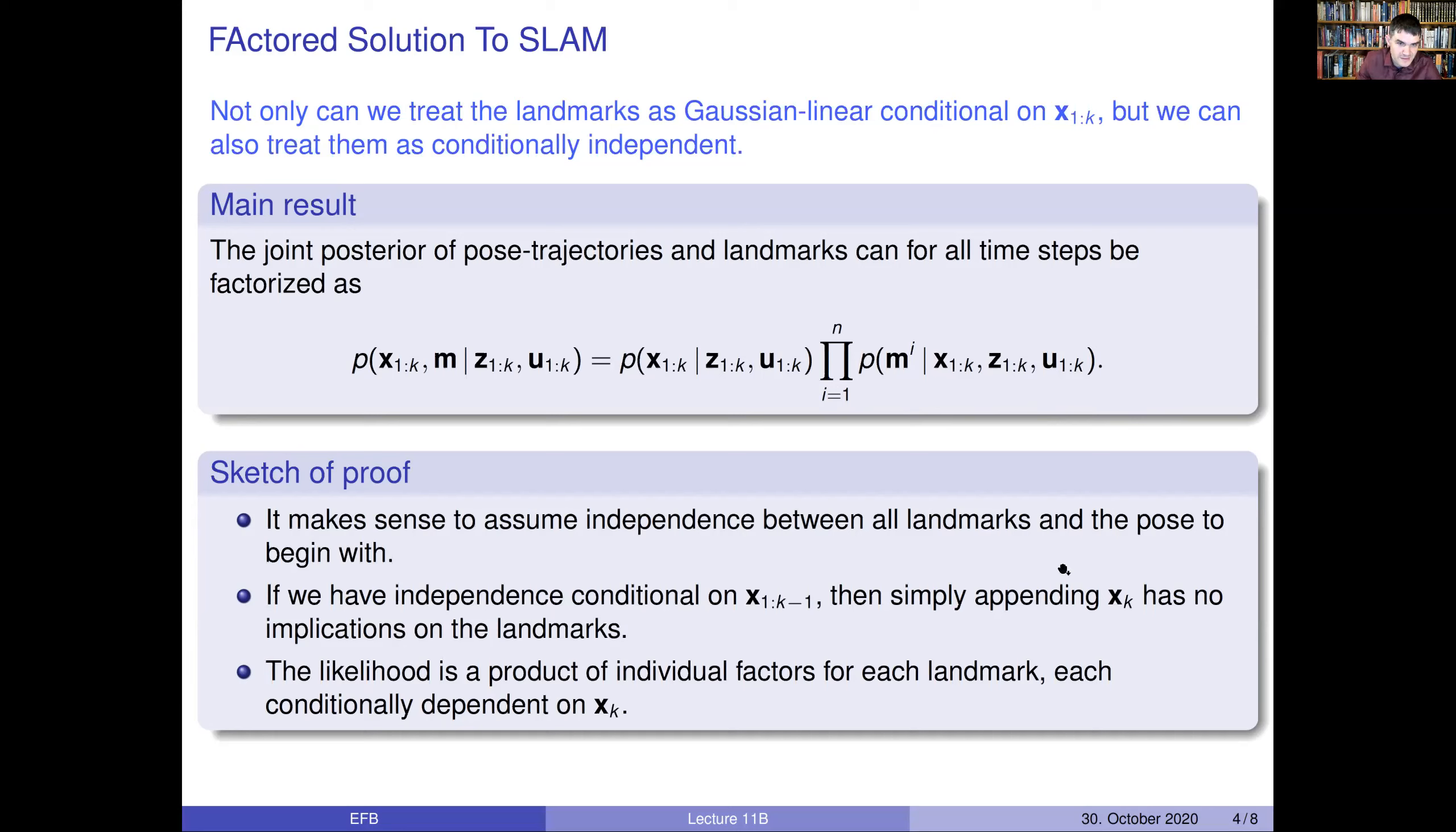How can we show this? Well, here is a sketch of the main ideas. We might assume that all the landmarks to begin with are independent. And what happens in a particle filter when we go from one time step to another time step is that we just append the new state to the trajectory. We are never actually performing a Chapman-Kolmogorov integral. We are never really doing any marginalization. And as long as we don't marginalize, all these independence properties are retained. And the only thing then that could screw it up would be the measurement model. But in the measurement model, we also have a product of likelihoods from each of the landmarks. So the measurement model is also not going to screw up our conditional independence. So this is very nice, utilizing the key structures of the SLAM problem.